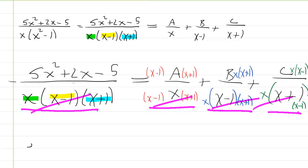So in other words, you're left with the numerators. So you'll have 5x squared plus 2x minus 5 equals A times x minus 1 times x plus 1 plus Bx times x plus 1 plus Cx times x minus 1.